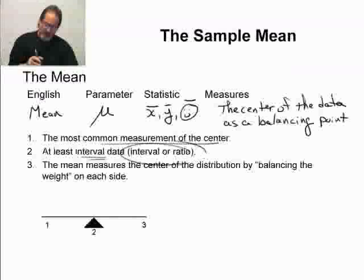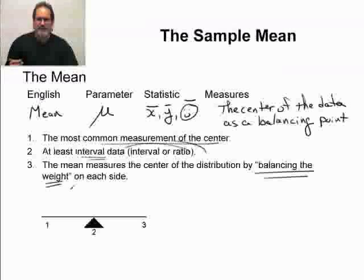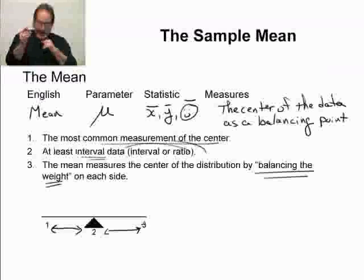Now, like I said a few moments ago, the mean measures the center of the distribution by balancing the weight on each side. So if I have data values one, two, and three, you know how to calculate the mean. It's the same as the average you've done back in grade school. Add up all the numbers, divide by the number of values you just added up. So if I take one, two, and three, add them up, divide by three, I get two. And if I look at this, I have equal distance between the mean and the other data points. It will actually balance the data right in the middle.